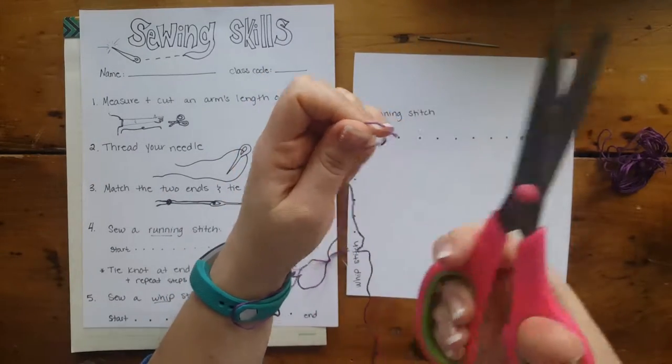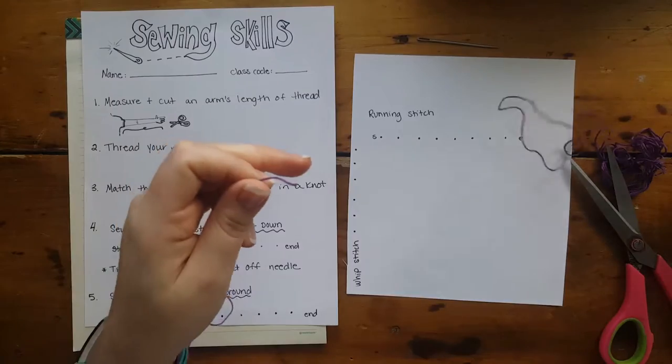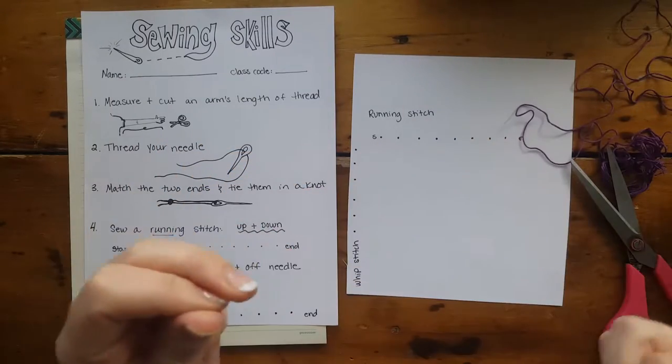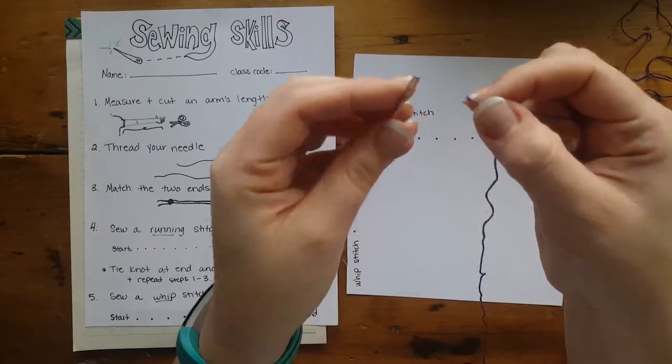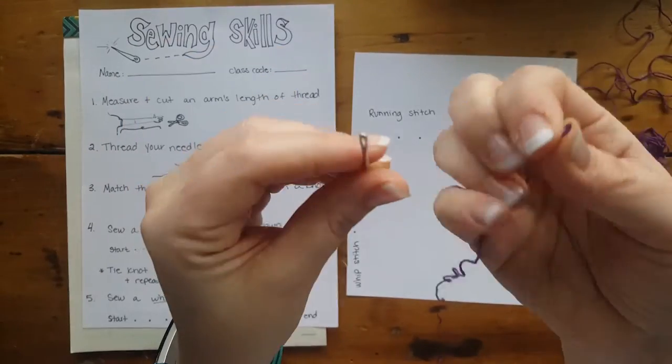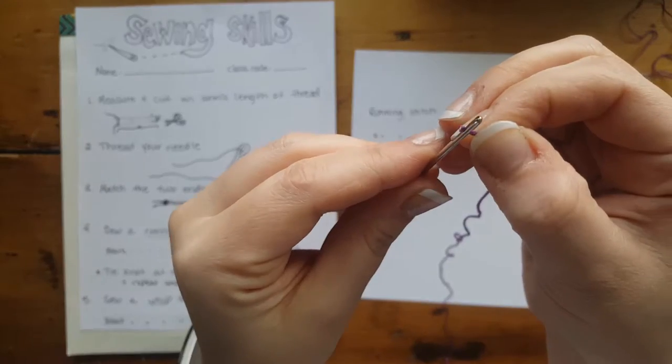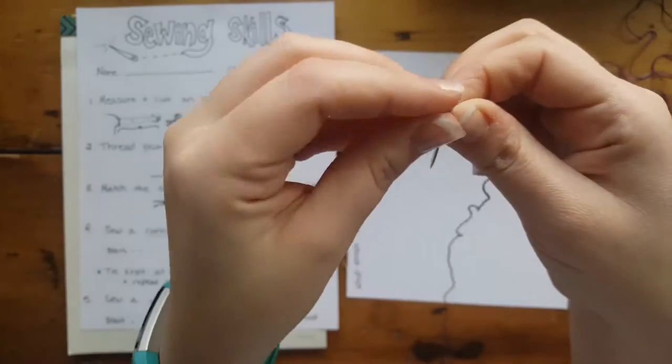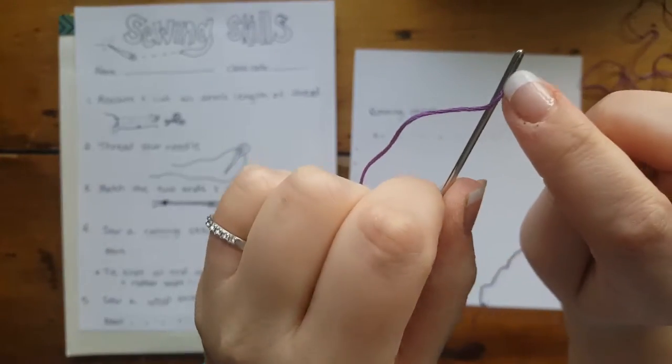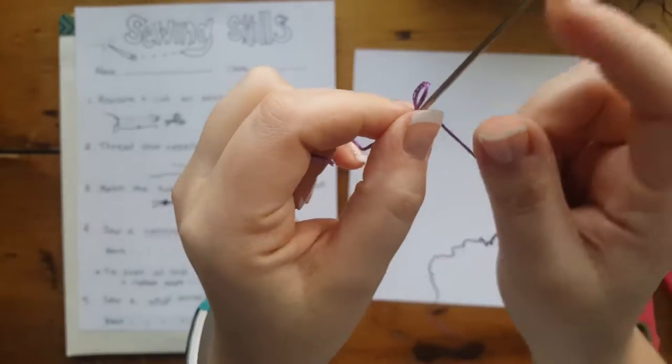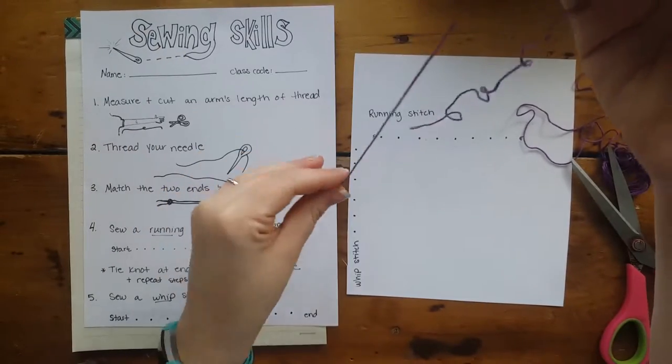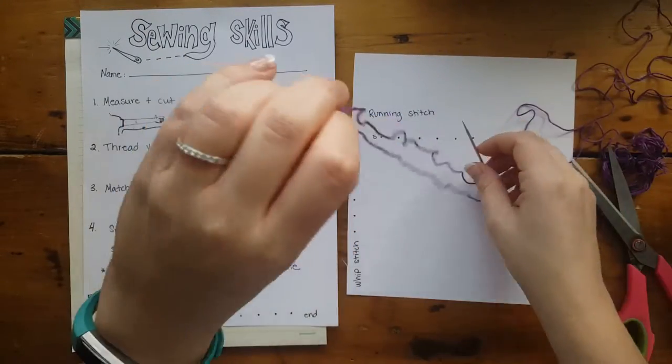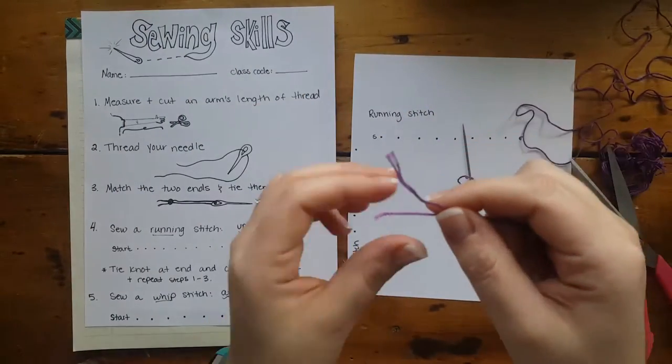Our next step is threading the needle. You pinch the end of your thread and go through the eye of the needle. These are really big eyes on these needles. I like to use tapestry needles—they're a little bit thicker and have a nice sharp point. Then we're going to make the two ends meet and tie a knot.